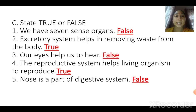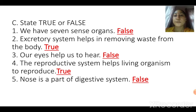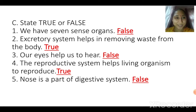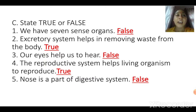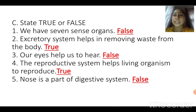Exercise C — true or false. First one: we have seven sense organs. Do we have seven sense organs? No, it's false because we have only five sense organs: eye, ear, nose, skin, and tongue.